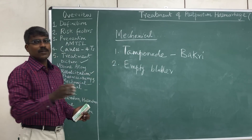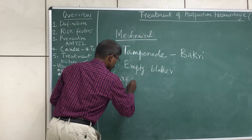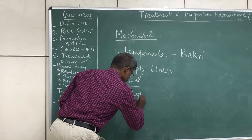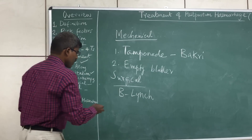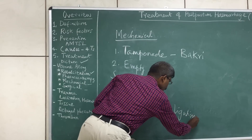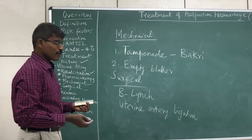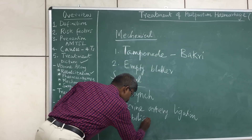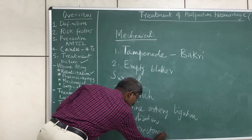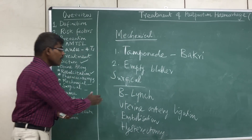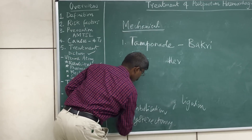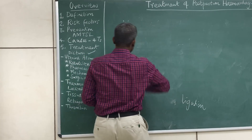If tamponade does not correct postpartum hemorrhage, the last resort is surgical management. Options include compression suturing (B-Lynch sutures), uterine artery ligation, and angiographic embolization of the vessel. Finally, if nothing else works, the last resort is hysterectomy.